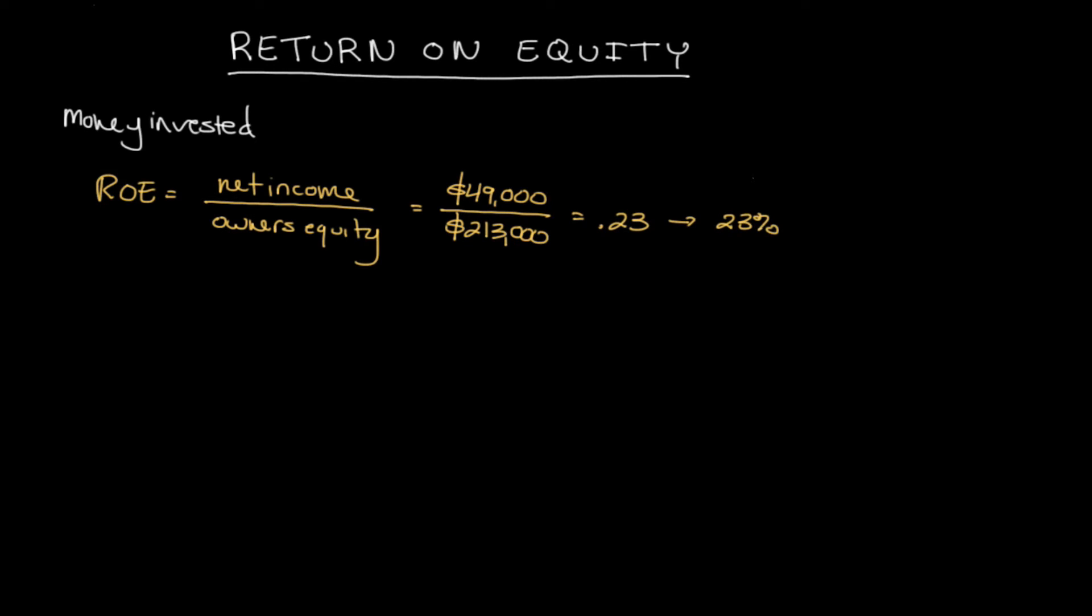Dividing those two numbers together would actually get us 0.23, which we could show as a percentage or 23%. This percentage is pretty meaningful because it essentially represents that for every dollar in equity, the firm was able to generate 23 cents in profit.